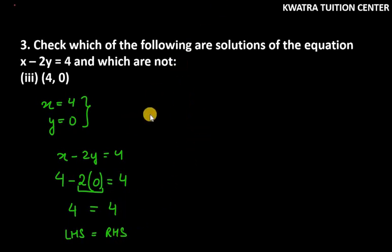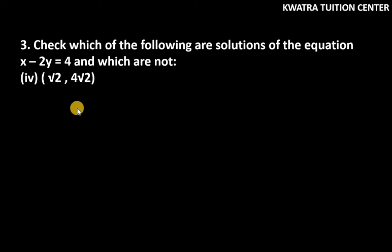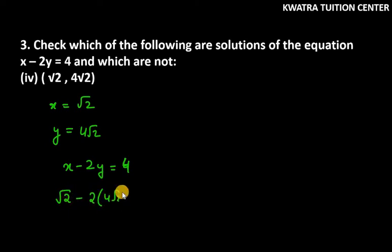Let's do the fourth part. The solution is (√2, 4√2). So we will put this the same way as we did before. x ki value √2 aagayi, y ki value 4√2 aagayi. Now we will put this into the equation so that we can check if left hand side and right hand side are equal or not.